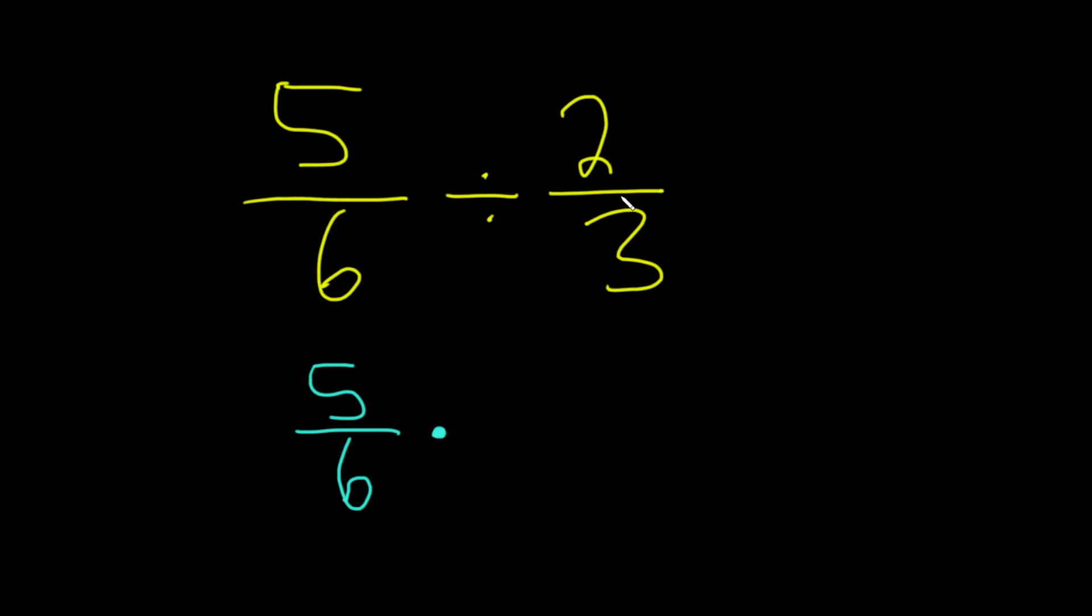You basically find what's called the reciprocal of 2 thirds is 3 over 2, which is really important to remember. So division is multiplication by the reciprocal. So all you do is basically flip this and put a times.